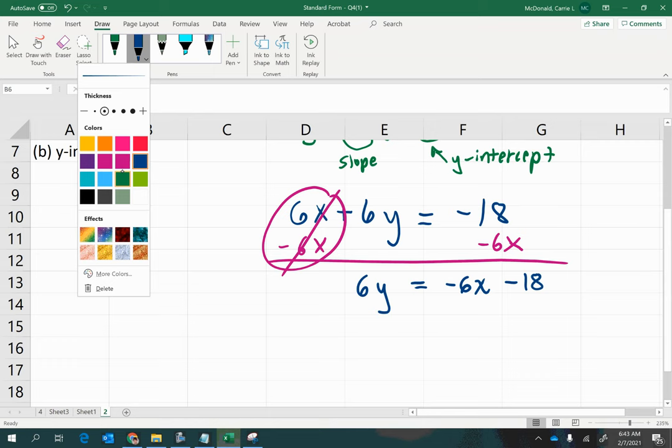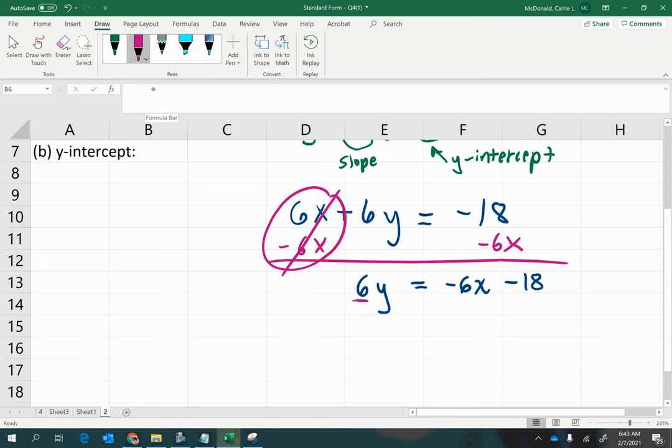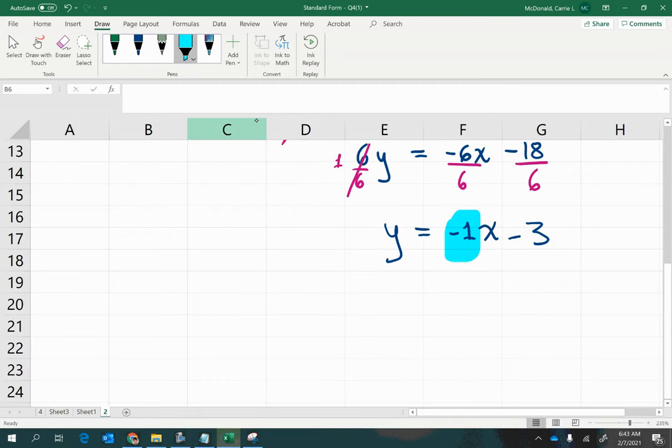Then divide both sides by 6, making sure to divide all of your terms. 6 divided by 6 is 1, and 1 times y is simply y. We have negative 6 divided by 6, which is negative 1 times x. Negative 18 divided by 6 is negative 3. Notice that we got the same answers as before: here is your slope and here is your y-intercept coordinate.